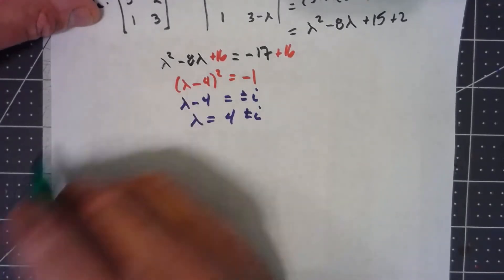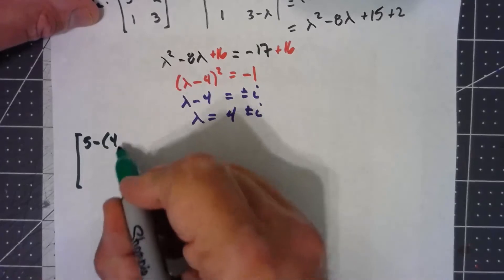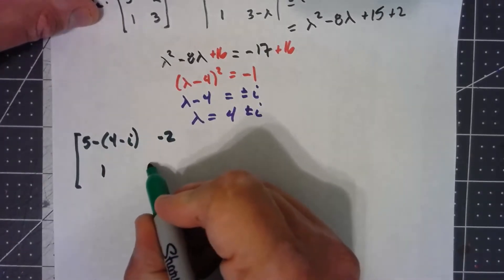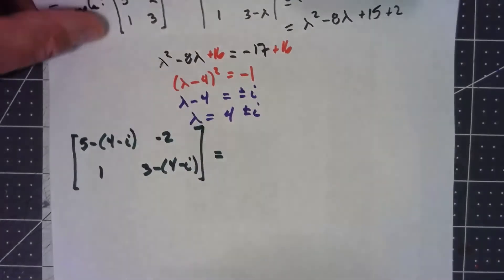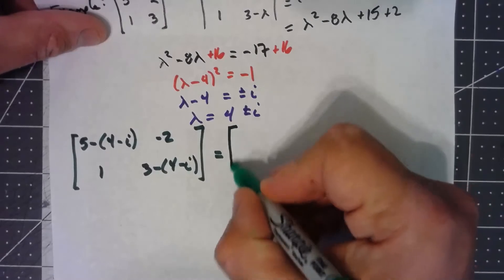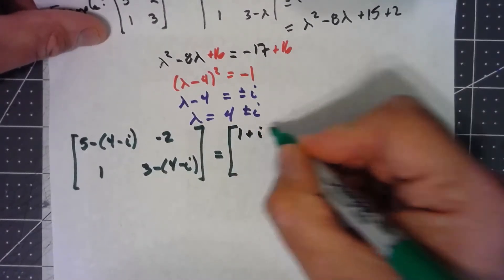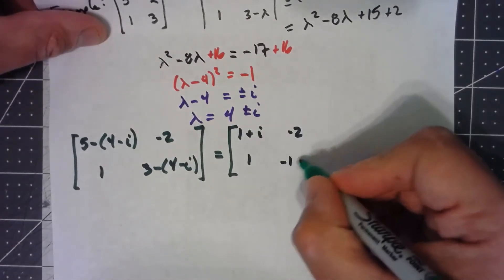And let's figure out our eigenvectors for that. So I'm going to take the matrix [5-(4-i), -2; 1, 3-(4-i)]. That's going to give me [1+i, -2; 1, -1+i].